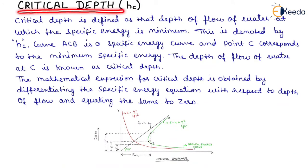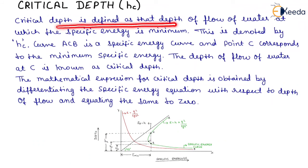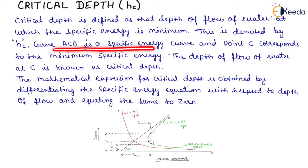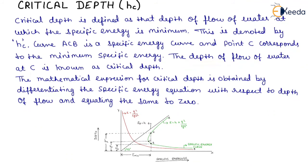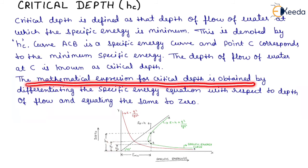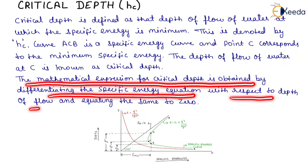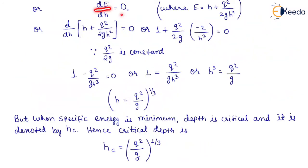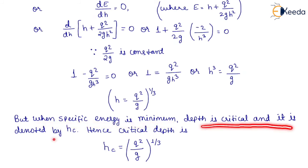The next topic is critical depth HC. Critical depth is defined as that depth of flow of water at which the specific energy is minimum, denoted by HC. Curve ACB is the specific energy curve and point C corresponds to the minimum specific energy. The mathematical expression for critical depth is obtained by differentiating the specific energy equation with respect to depth of flow and equating to zero: dE/dH equals 0, where E equals H plus q² upon 2GH². After solving, HC equals (q² upon G) to the power 1 by 3.